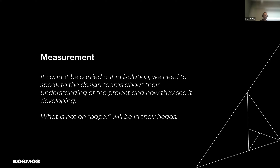Design teams are broken into sub-disciplines, and each discipline has its own way of working, its own process and output. We need to communicate with them at an individual or discipline level. As mentioned last time, the number of unfederated models can be anything from five to ten — meaning five to ten different sub-disciplines to communicate with on a weekly, fortnightly, and monthly basis. Measurement cannot be carried out in isolation; we need to speak to our design teams.